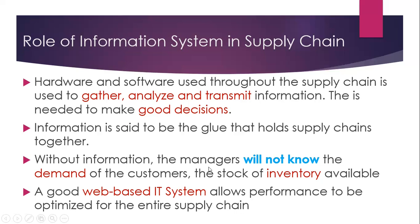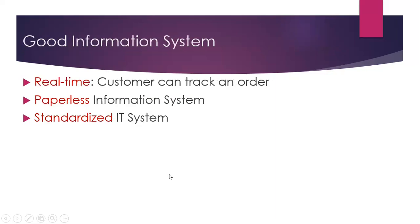Without information, managers will not know the demand of customers or the stock of inventory available. A good web-based IT system allows performance to be optimized for the entire supply chain. A good information system should be real-time, where customers can track their orders. It should be a paperless and standardized information system.